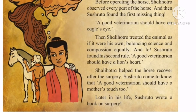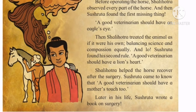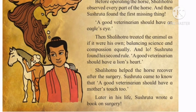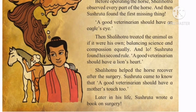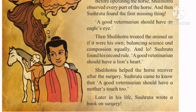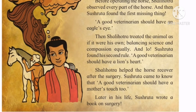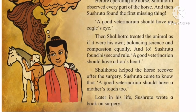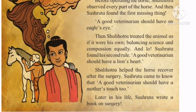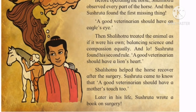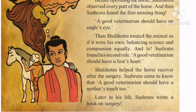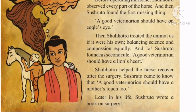Sushruta found his second rule — a good veterinarian should have a lion's heart. Looking at the patient, the doctor should not feel detached. He should have a lion's heart. He should think that as a human being, this patient is mine and I am going to treat him well. So, a good veterinarian should have eagle's eye and also lion's heart.